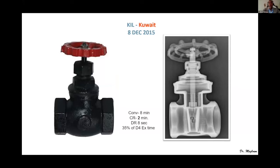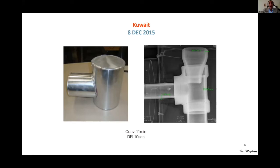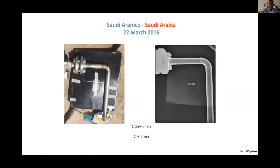Another example showing 35% of conventional exposure time. In Kuwait, we got very nice images, and we can also measure pipe thickness and detect corrosion with diameter measurements on screen. Within Saudi Aramco in 2016, using flat images with elbows, we can get very nice screens, with time saving from eight minutes down to two minutes using computerized radiography. Focusing on these screens, you can see very nice image quality indicators (IQI) with the smallest diameter visible.